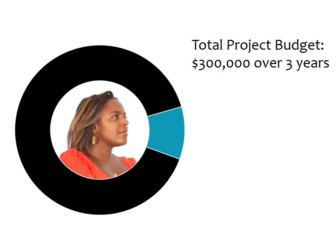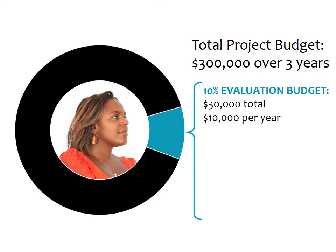If Jen asked for the maximum amount for projects funded through the New to ATE program track, her grant would be $300,000. If she dedicated 10% of the total project budget to evaluation, that would mean there would be $30,000 over three years for evaluation, or $10,000 per year.